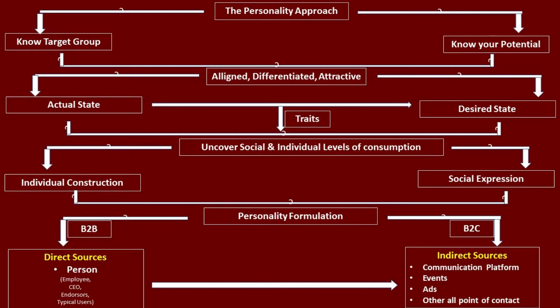Step 7 is to uncover social and individual levels of consumption of brand personality. This step is very critical as it involves the personal and social lives of consumers and assesses the role that brand personality plays in them. This step is to know whether consumers consume brands for their individual construction of personality or for their social expression of personality.